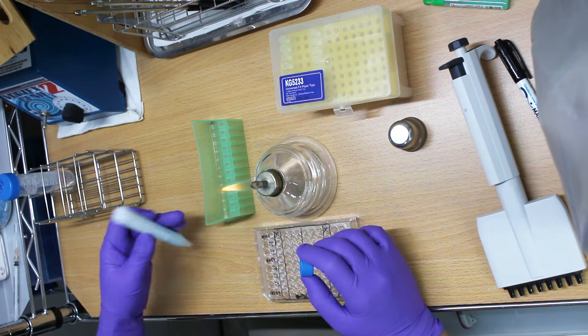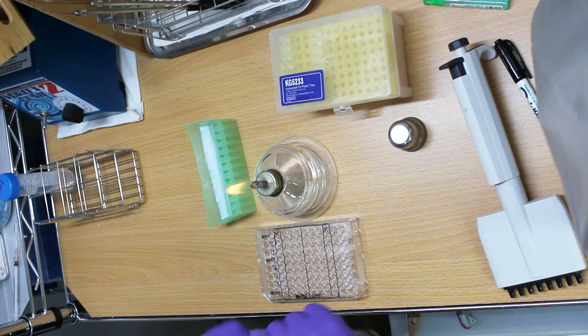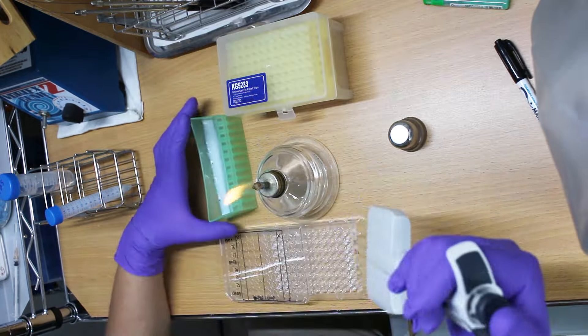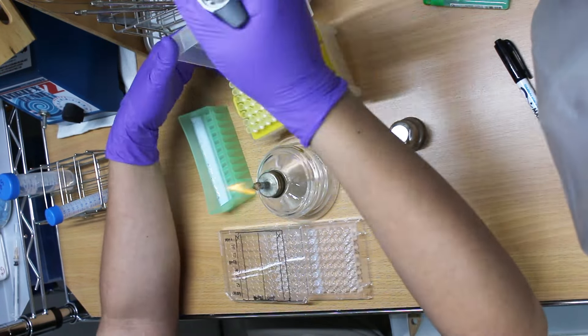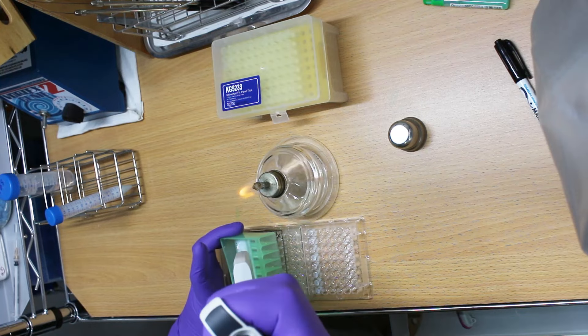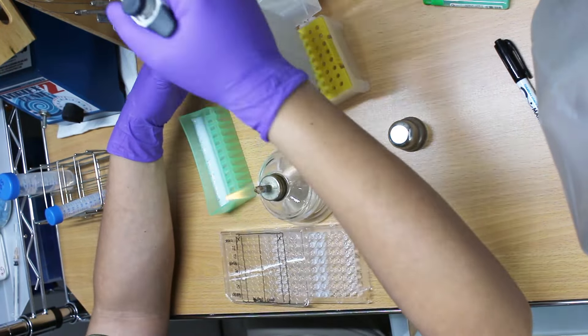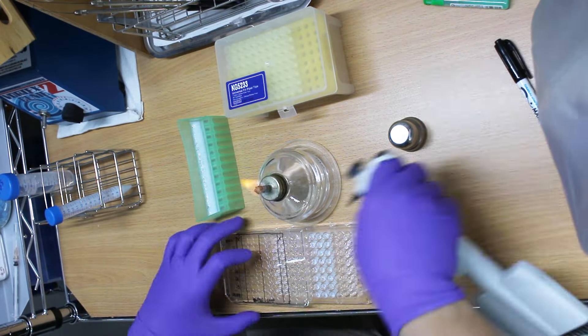So I prepared eight bacteria. Three are from my collection and five of them are isolated directly from my hand. And I'm going to mix them with the soap I got in my house. I'm using a 15% concentration of soap plus normal saline.